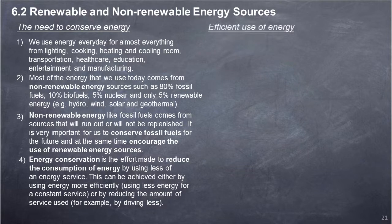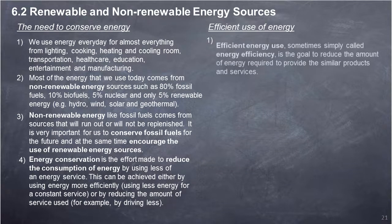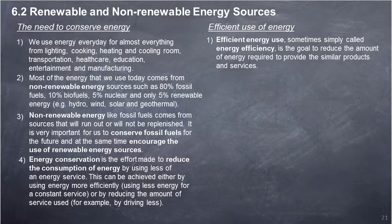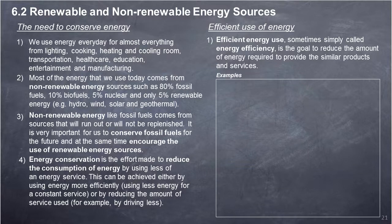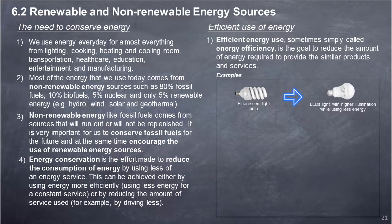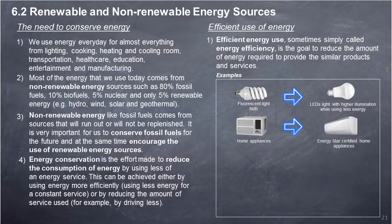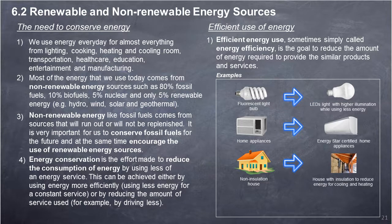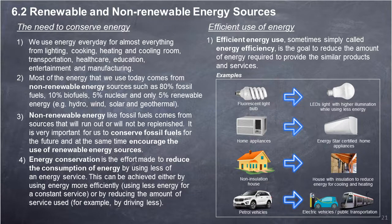Efficient Use of Energy: Efficient energy use, sometimes called energy efficiency, is the goal to reduce the amount of energy required to provide similar products and services. Examples include: replacing fluorescent light bulbs with LEDs that provide higher illumination while using less energy; replacing home appliances with Energy Star certified appliances; improving house insulation to reduce energy for cooling and heating; and replacing petrol vehicles with electric vehicles or using public transportation.